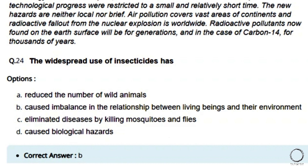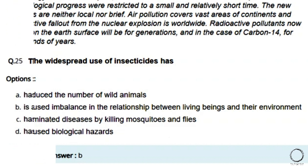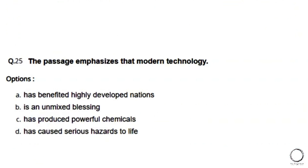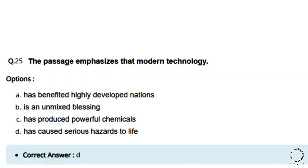Next question on the same passage: The passage emphasizes that modern technology — options: a) has benefited highly developed nations, b) is an unmixed blessing, c) has produced powerful chemicals, d) has caused serious hazards throughout life. The right answer is option D, because all other options are contradicted by the passage.